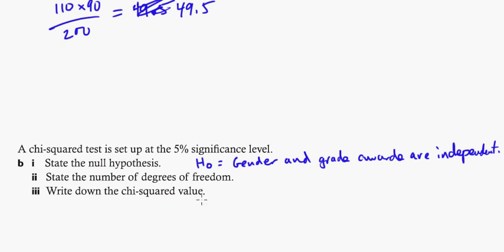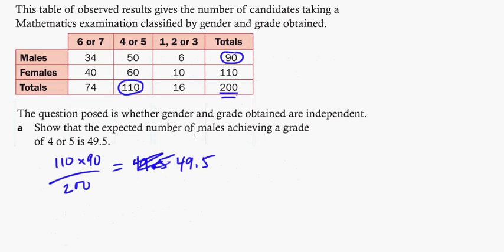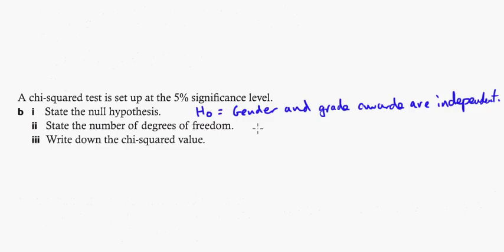State the number of degrees of freedom. You can put this in your calculator, but the way you do degrees of freedom is you count the number of rows minus 1 times columns minus 1. In this case, there's two rows, so it would be 2 minus 1. And then there's three columns, 1, 2, 3. Be careful not to count the total rows. So that would be 3 minus 1, so you get 1 times 2, which is 2. So your degrees of freedom here are 2.